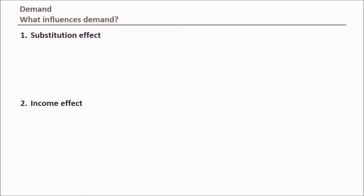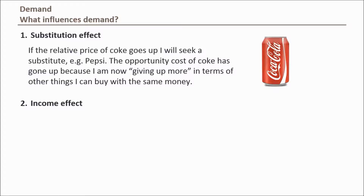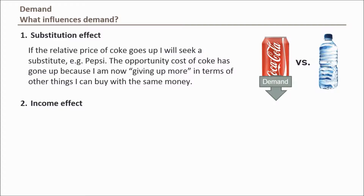The substitution effect takes place when you start considering alternative goods or services. Let's say all prices and your income remain unchanged except the price of cola, which increases. Because you still want a soft drink but don't want to pay more, you consider alternatives — other flavored soft drinks or beverages like bottled water. The relative rise in cola's price causes consumers to seek alternatives, lowering the quantity demanded for cola and increasing demand for the alternative good.